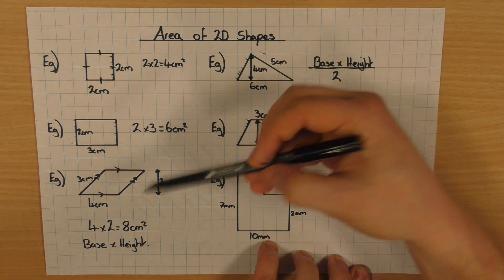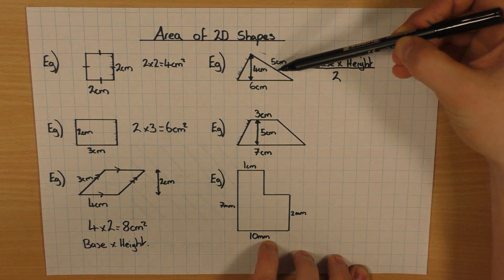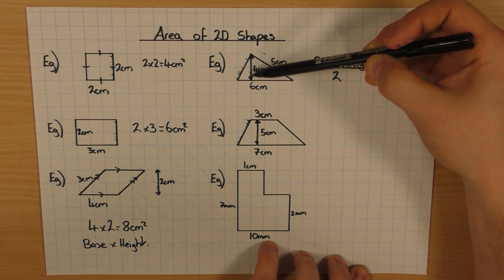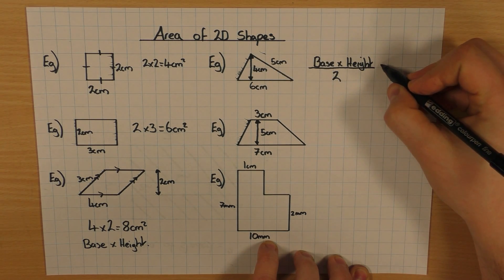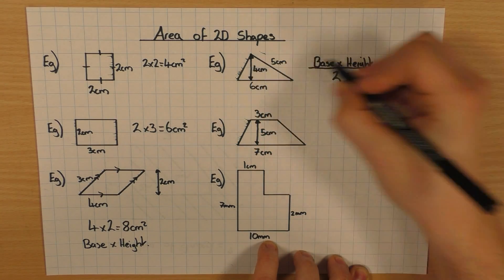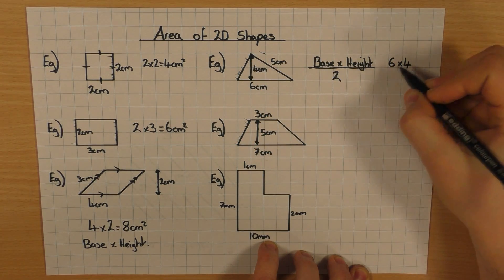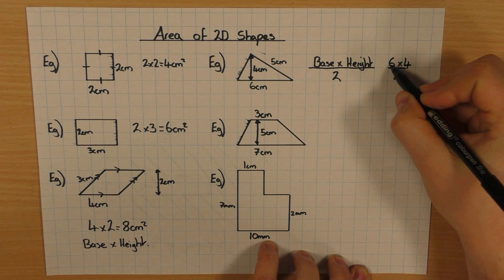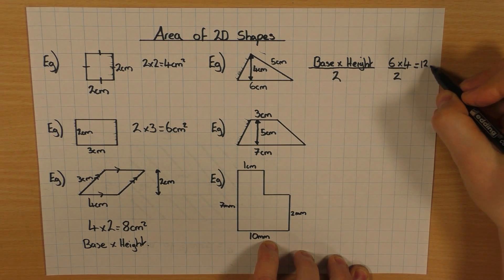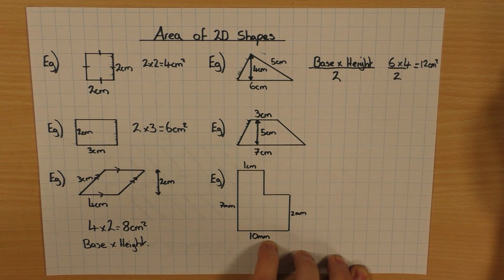Now, again, just like the parallelogram, I'm not interested in this diagonal or slanted height. I want the perpendicular height here, which is 4. So when I substitute this in, the base is 6, the height is 4, and I'm going to divide it by 2. So 6 times 4 is 24, half is 12, so 12 cm².